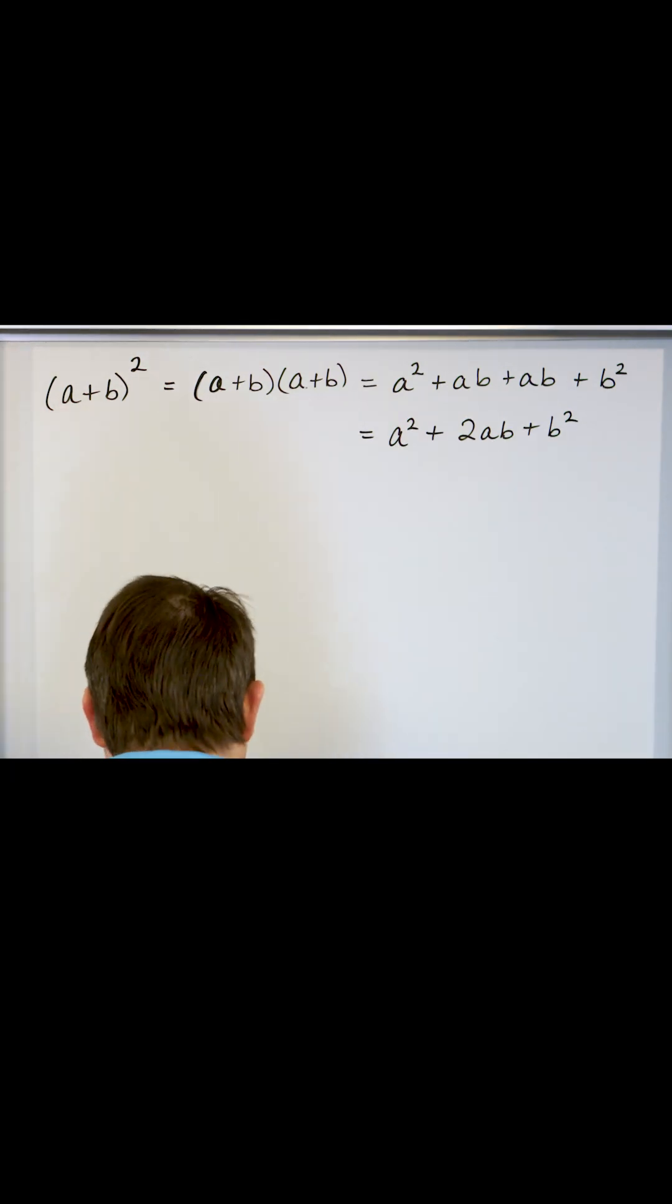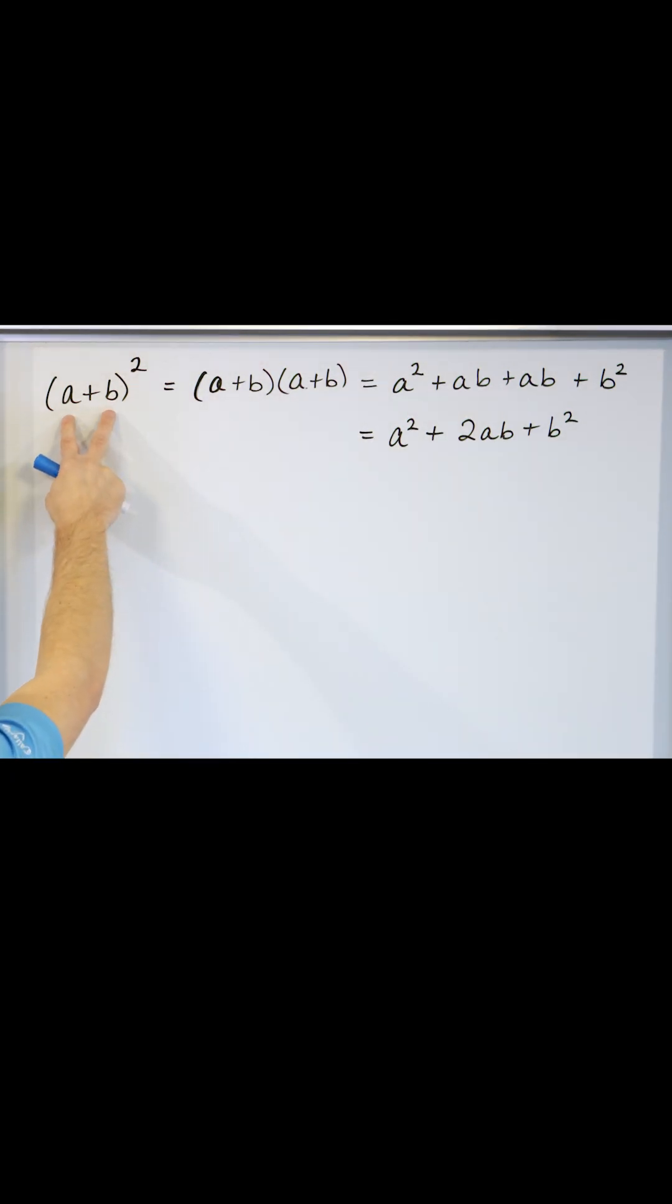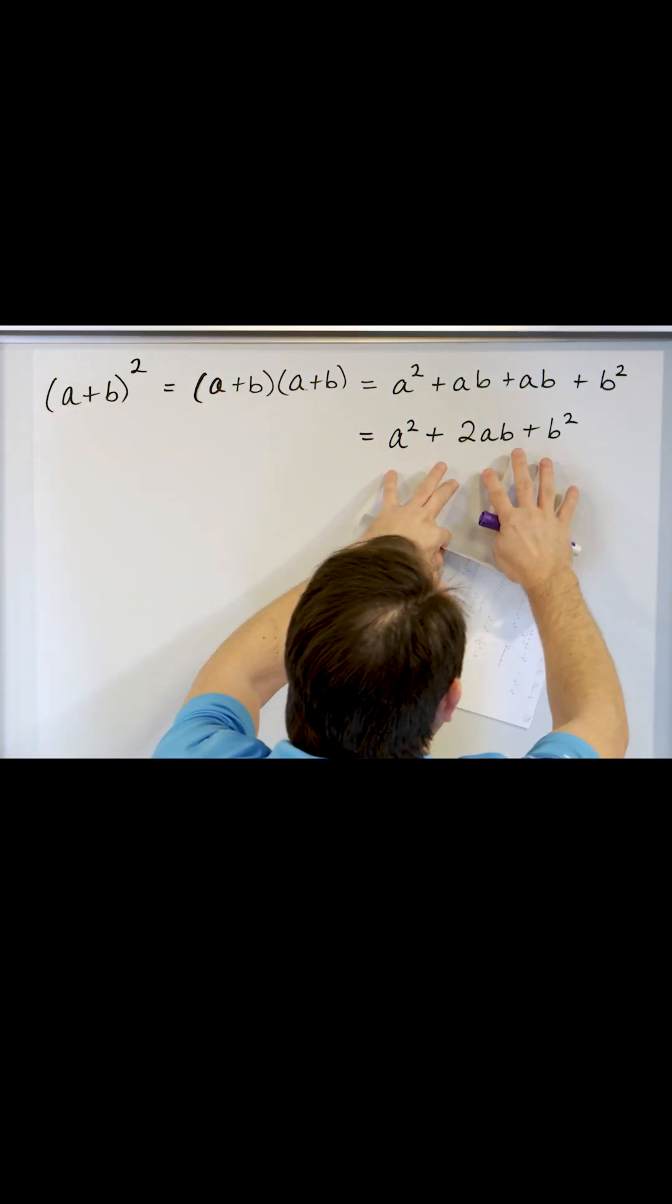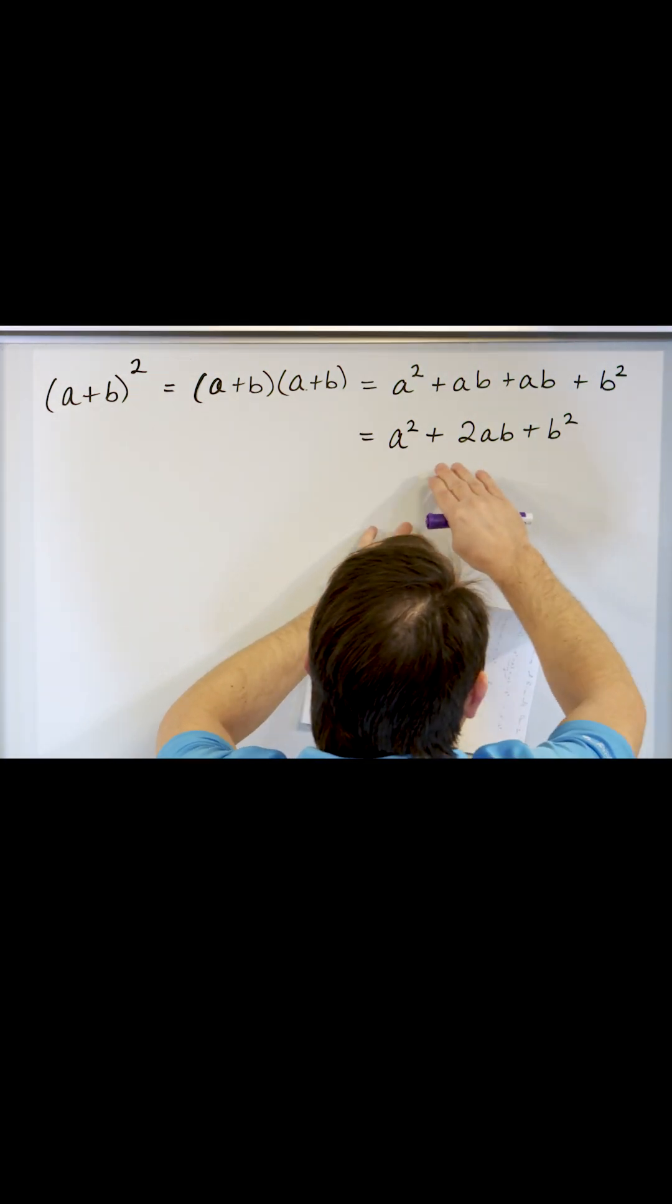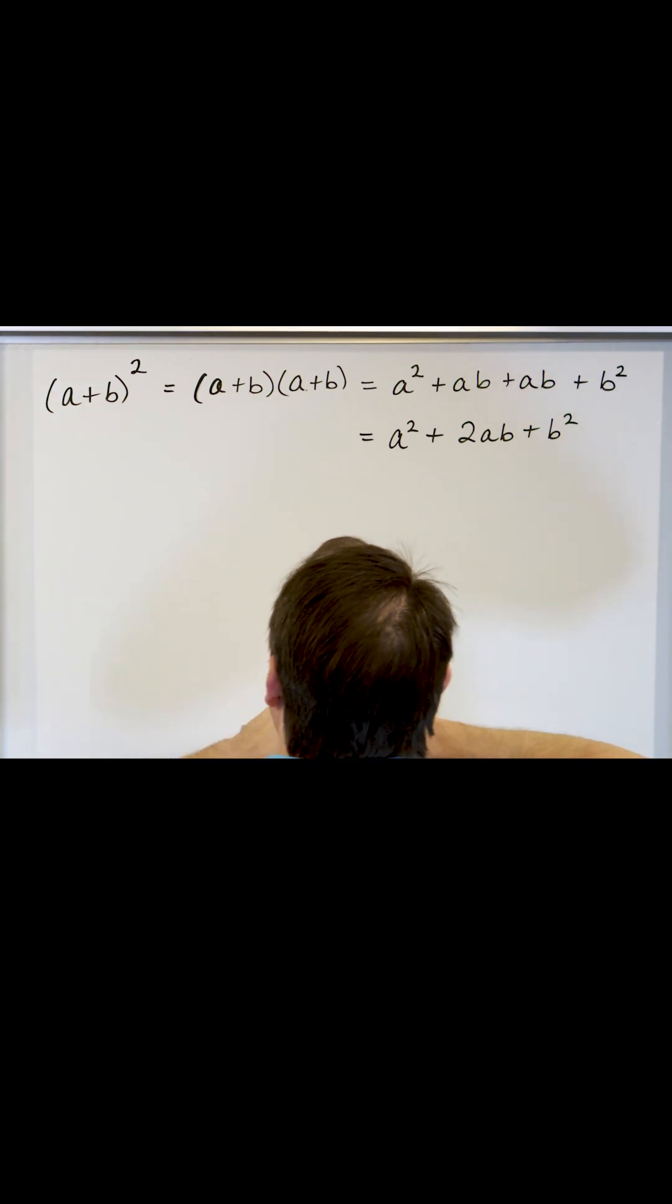So the bottom line is anytime I have a binomial like this where a can be whatever and b can be whatever but I'm squaring that binomial, then it is always going to look like this in the answer. a squared plus 2ab plus b squared.